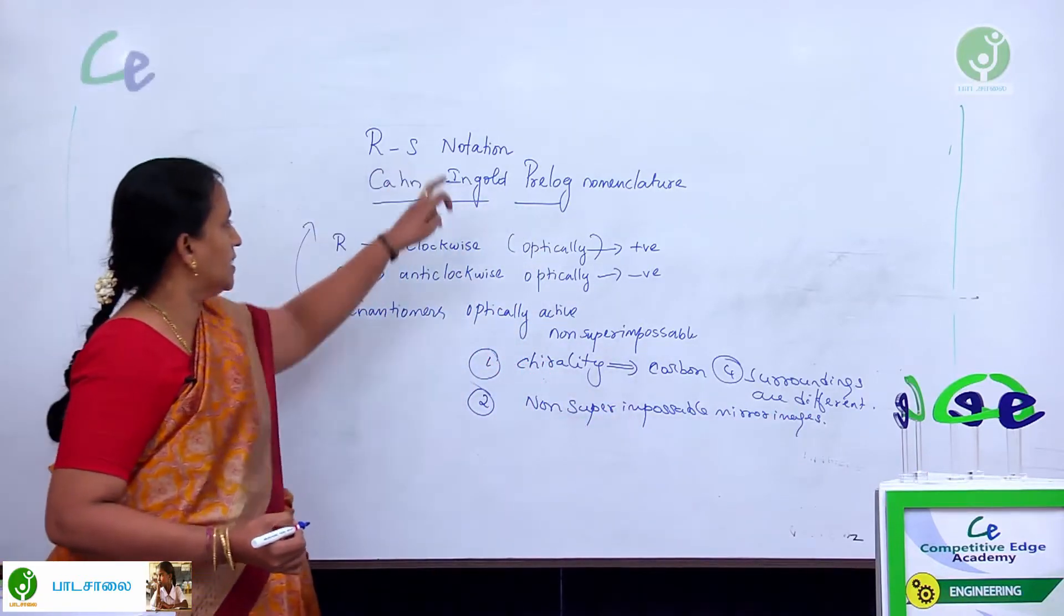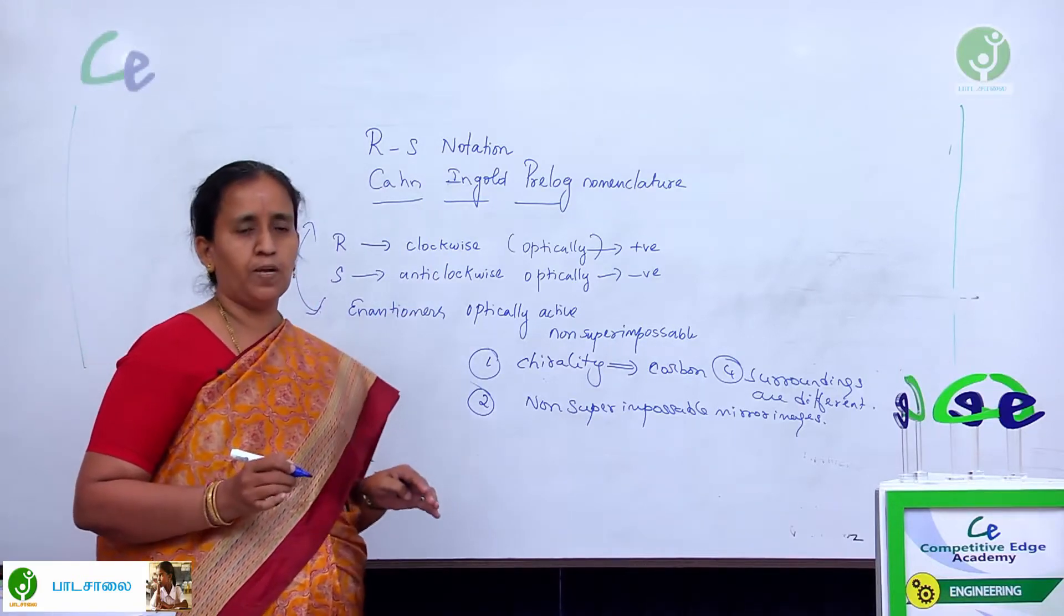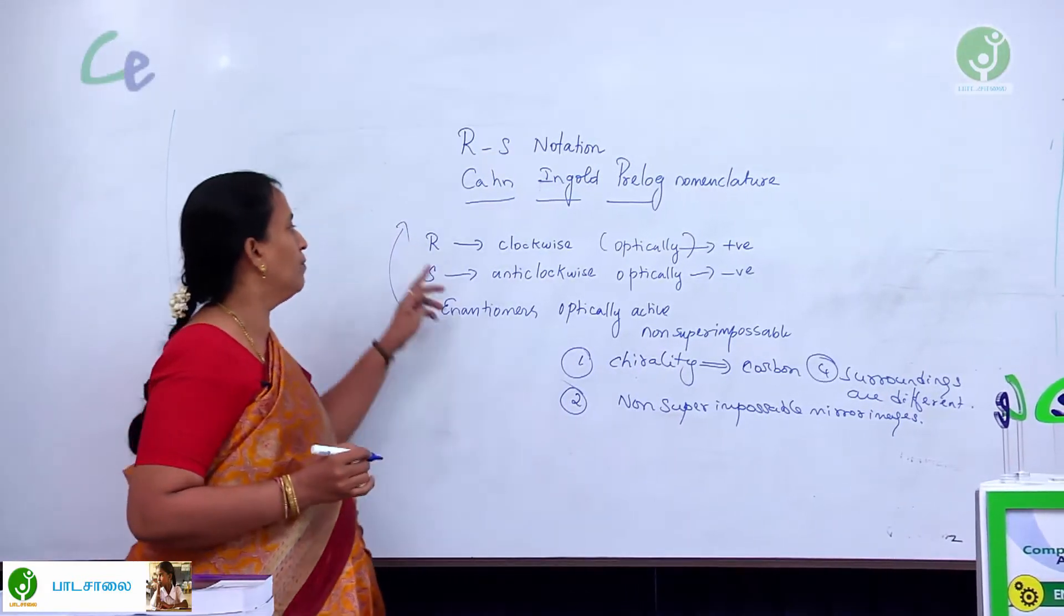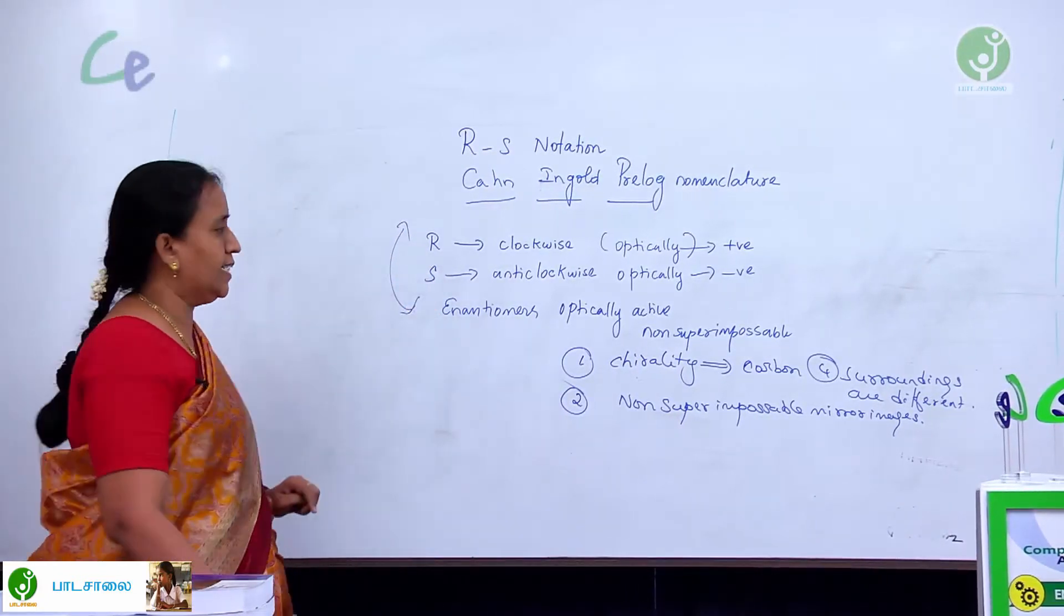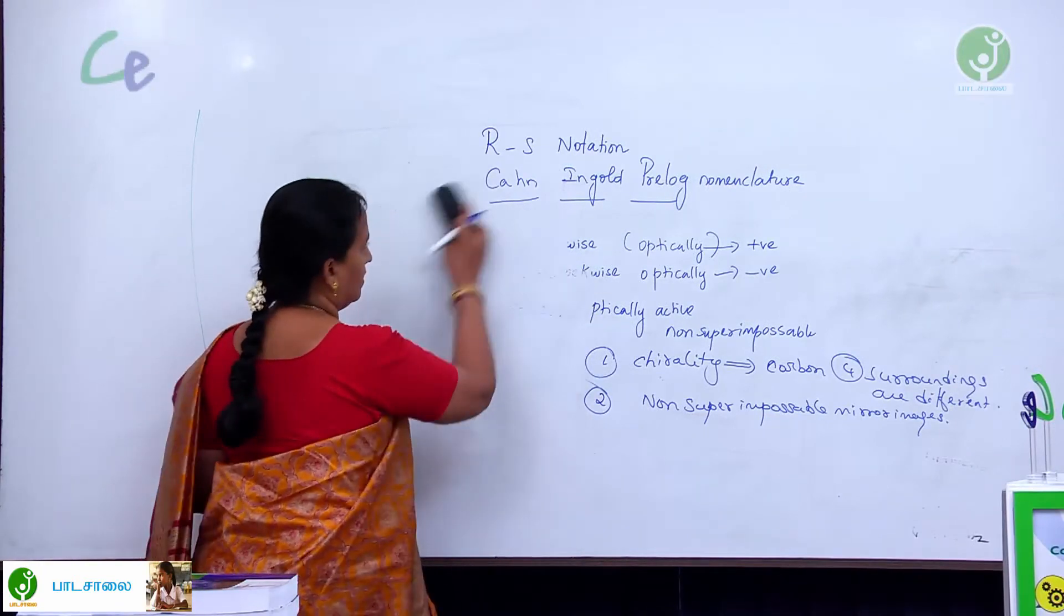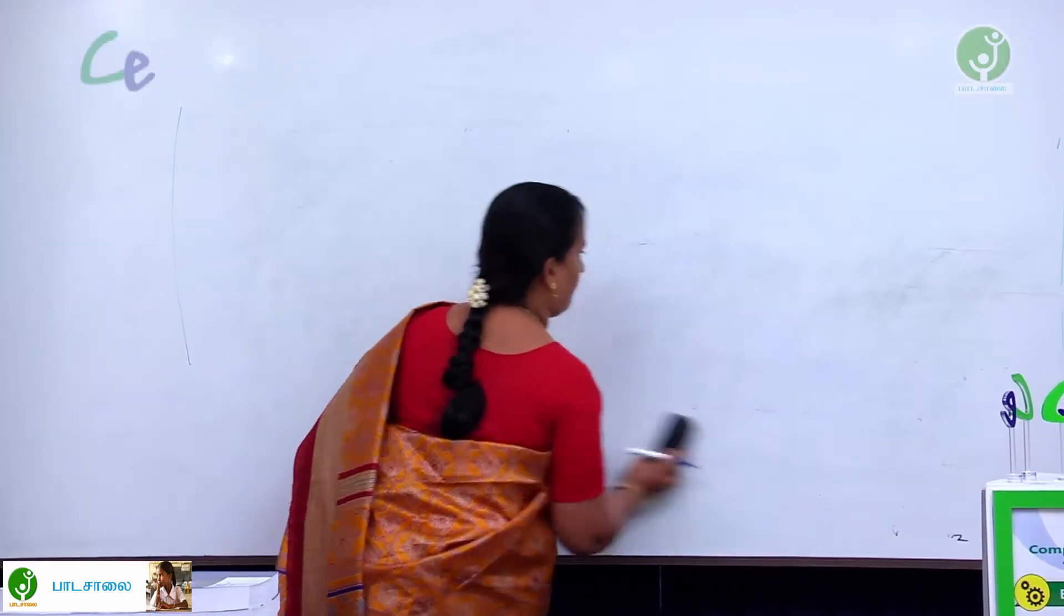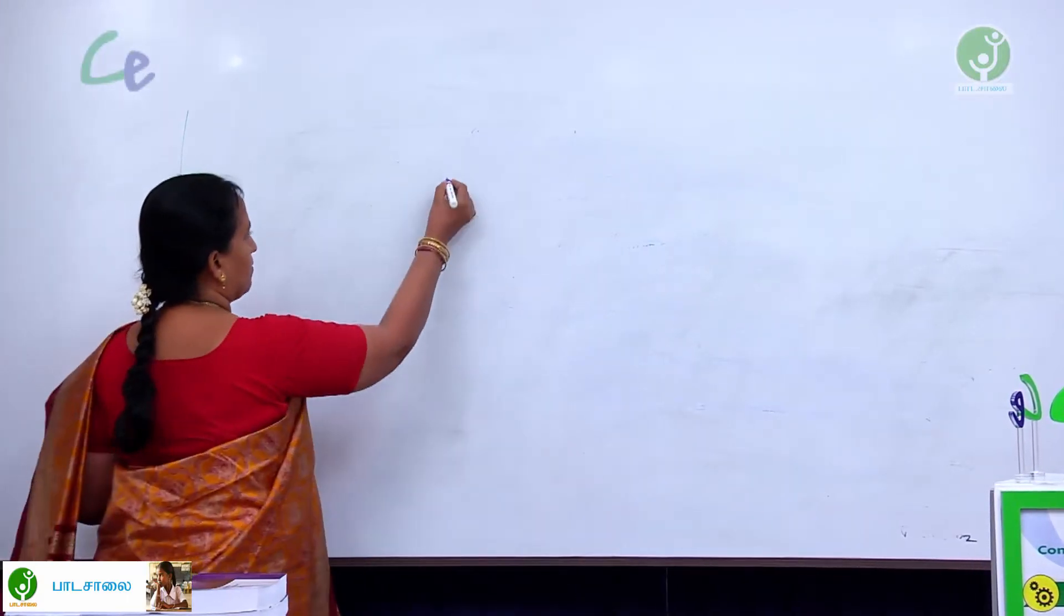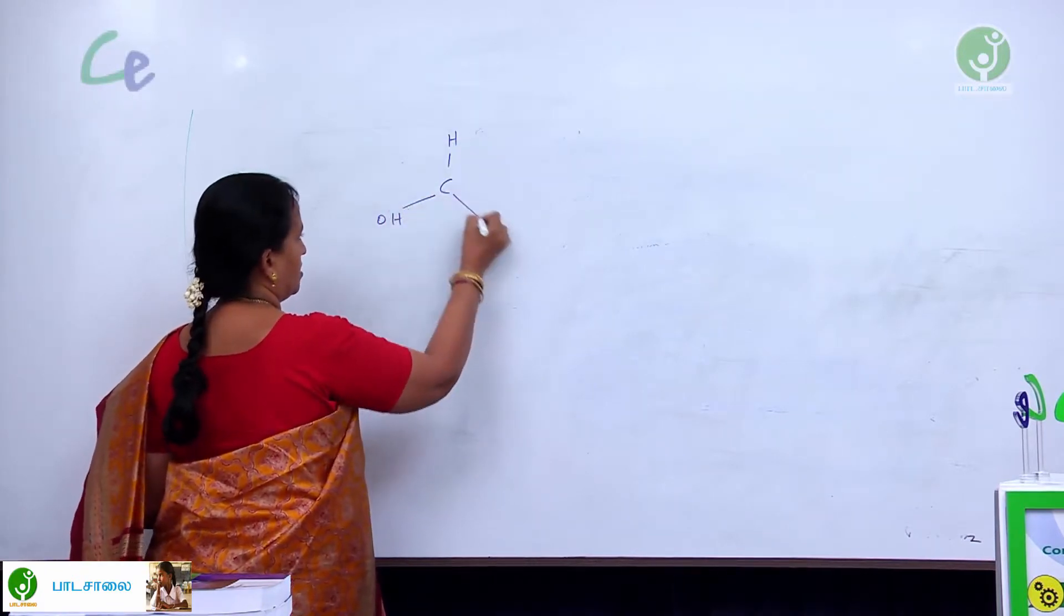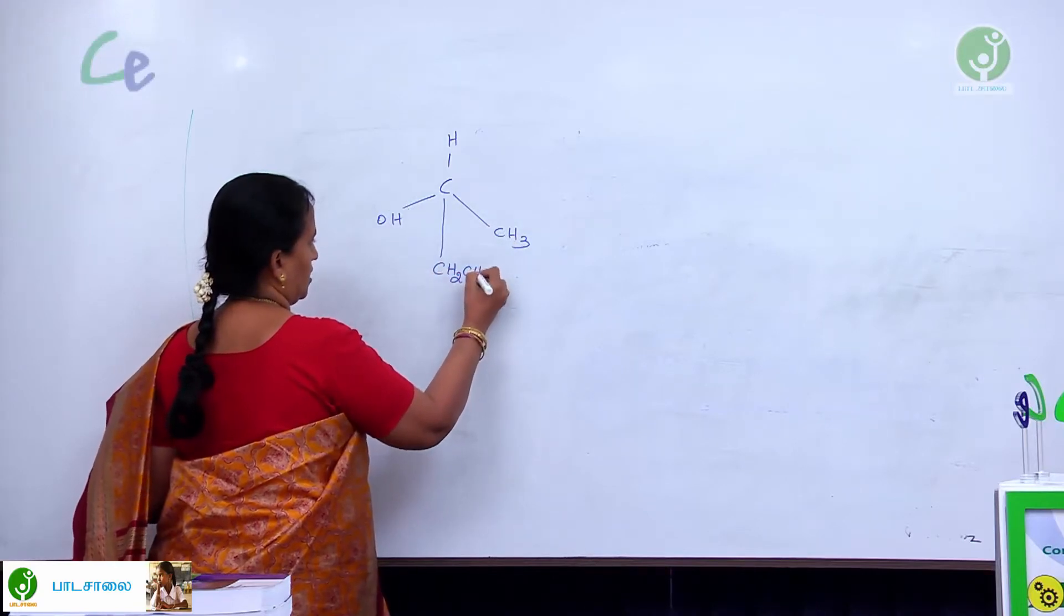Now today we are going to learn the topic. How to assign a particular compound with R or S? Let us take a chiral carbon. I am going for an example. Let us take a carbon compound: Carbon, hydrogen, OH, CH3, CH2CH3.